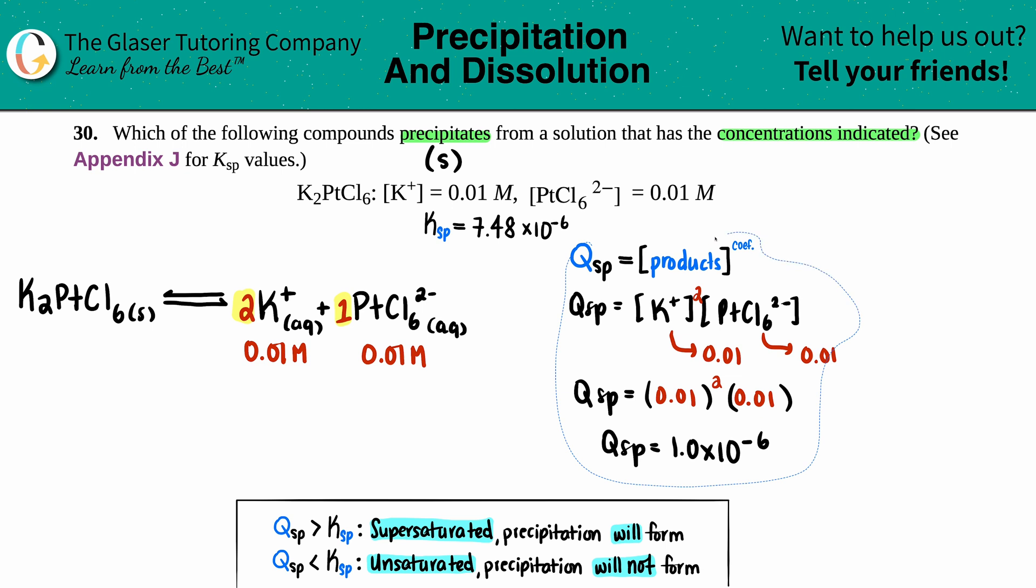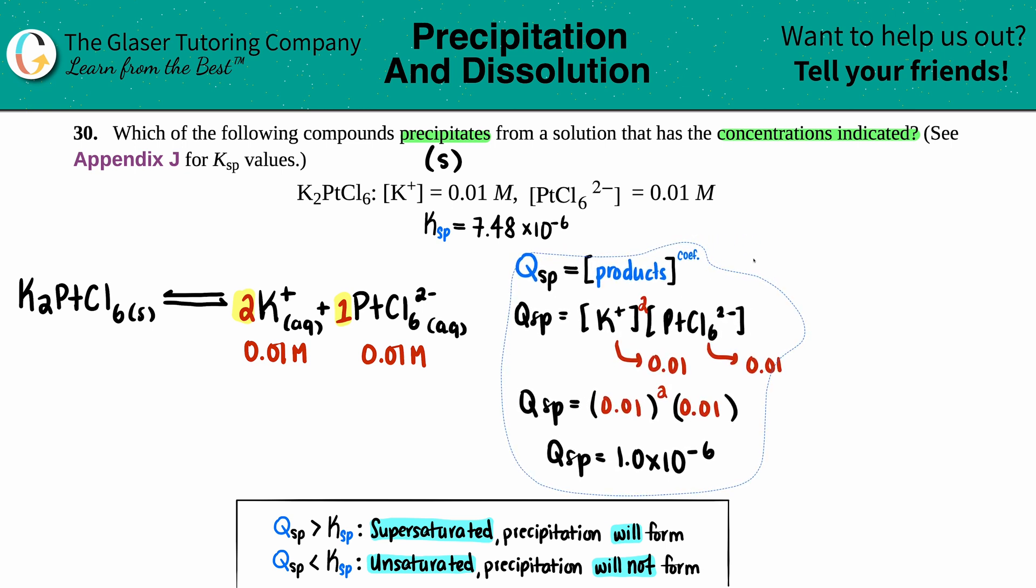All we have to do is take that Qsp value, which is 1.0 times 10 to the negative 6th, and compare it with the Ksp value, and that's the one we had to look up: 7.48 times 10 to the negative 6th. It could be easy because all we would have to do is look at those exponents. If the exponents are different then we could just gauge which one is greater or smaller by just looking at the exponents.